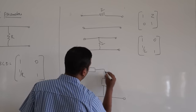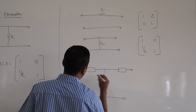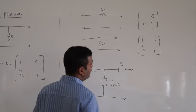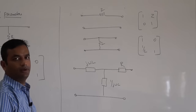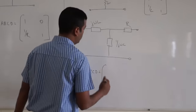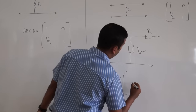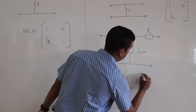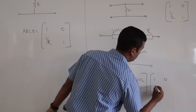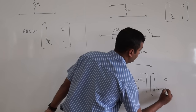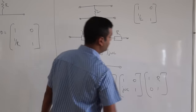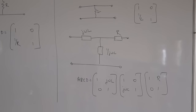Let us calculate the ABCD parameter for a network with elements jωL in series, 1/jωC in shunt, and R in series. It is a straightforward matrix multiplication. The series jωL gives matrix [1, jωL; 0, 1]. The shunt 1/jωC gives matrix [1, 0; jωC, 1]. The series R gives matrix [1, R; 0, 1]. This is the ABCD parameter of the cascaded LCR network.